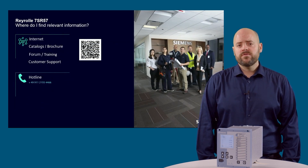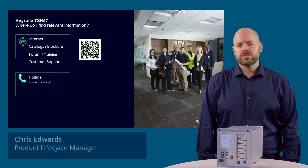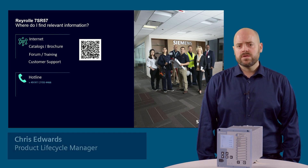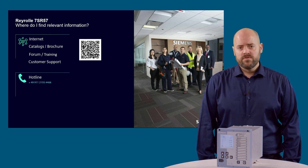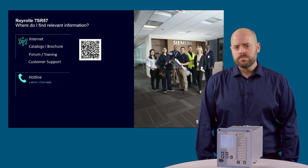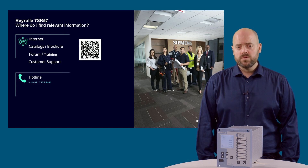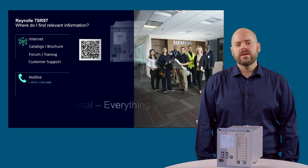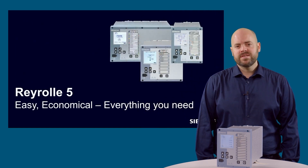You can find further information about the Reiro 7SR57 motor protection device via the internet, the Reiro 5 catalogue and various other locations. If further information about the 7SR51 feeder protection and 7SR54 transformer protection devices is required, there are also videos in this series that cover those products. Thank you for viewing this presentation.